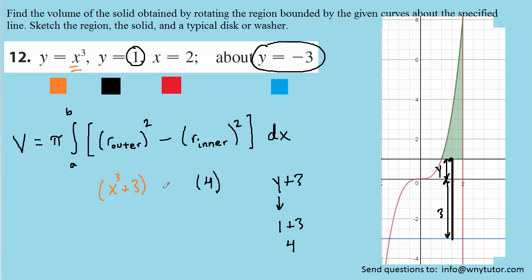Now, we'll fill in the rest of the expression. The only thing that we still need are the values of a and b. And these turn out to be the x values. And we're using x values because we're integrating with respect to x. They are the x values where the curves intersect.